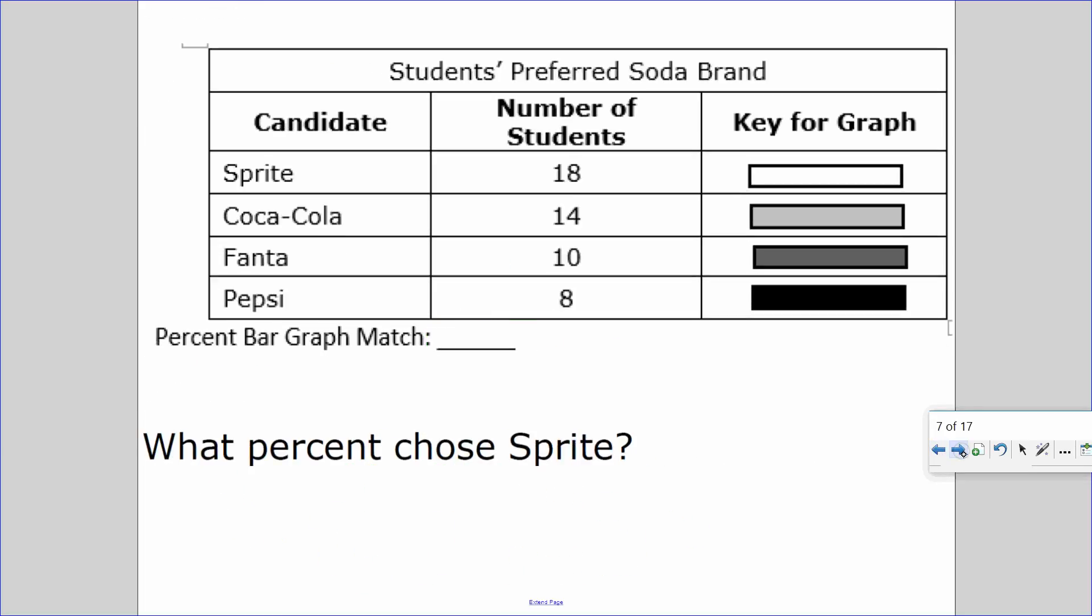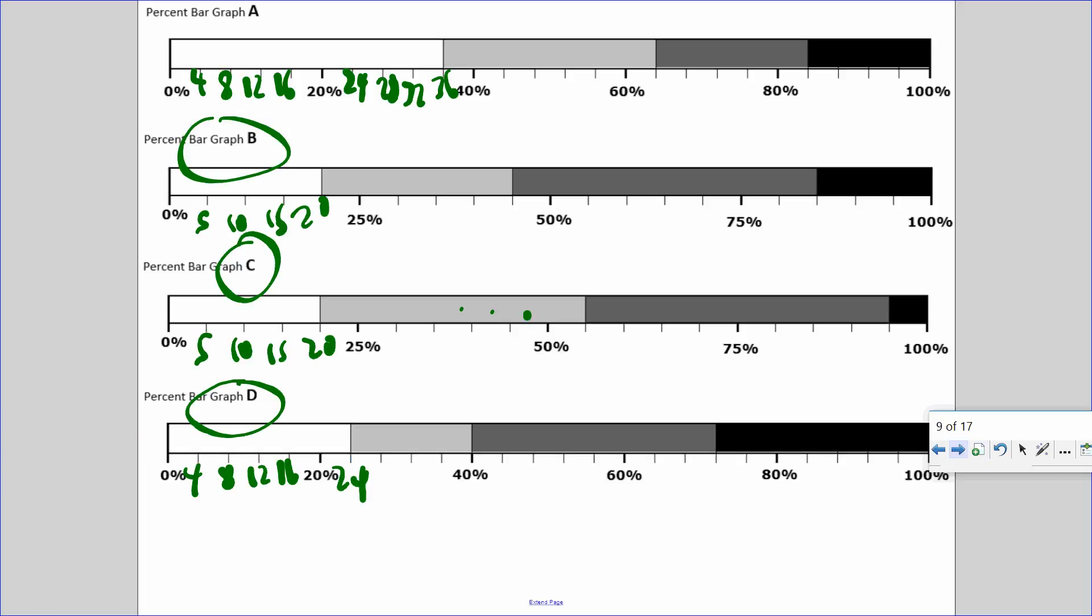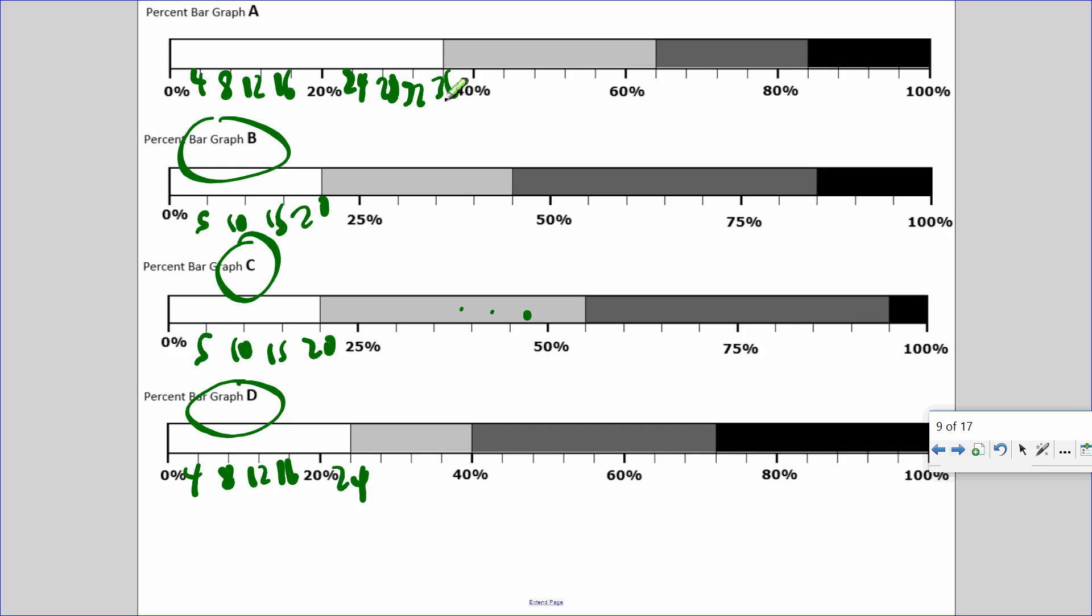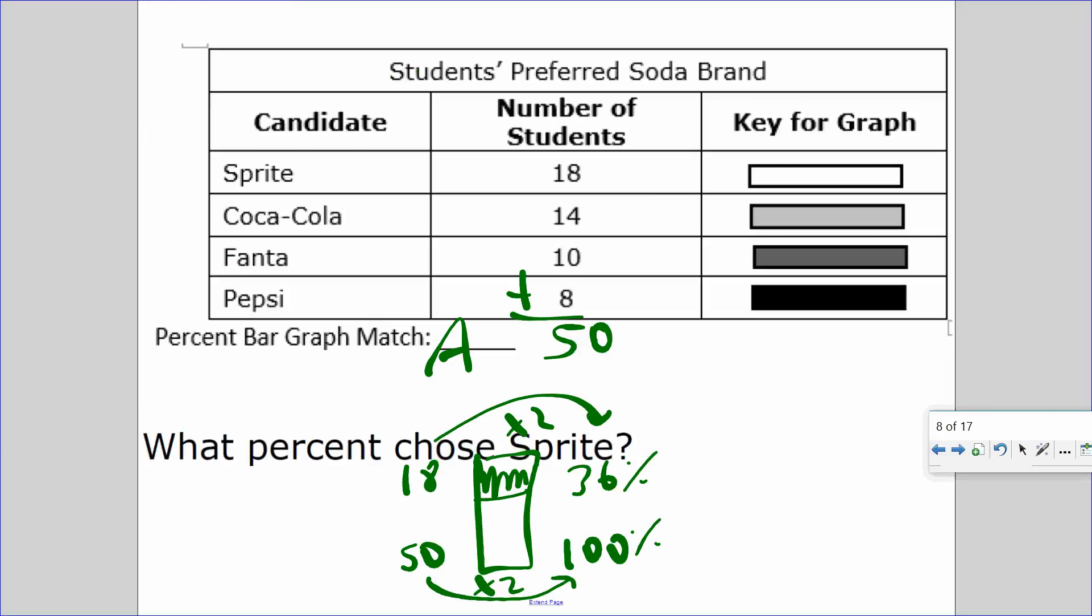Matches with C. I know this one is going to be the last choice, which is A, but let's see why. Students prefer soda brand, there are 50 students in the survey. So what percent chose Sprite? 18 out of 50 chose Sprite. What's the relationship from 50 to 100? Times 2, so 36% like Sprite. And according to this one, it is 36%, so it's A. So what we just learned is you are given a chart. Can you find a percentage of it and match it with a percent bar?